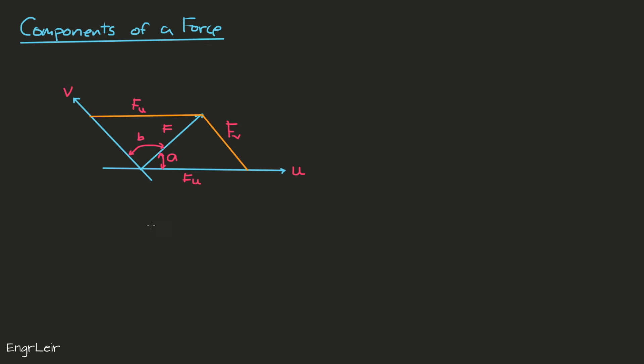Taking this triangle, we have here f, this is f sub v, and this one is f sub u. The angle here is a. We can see it's the same triangle.